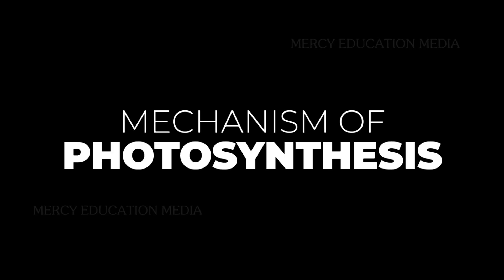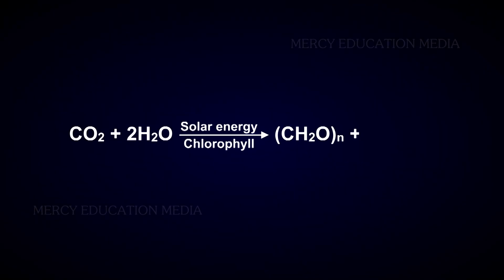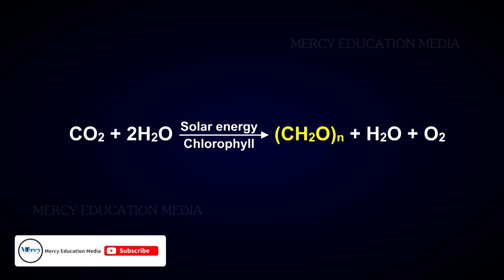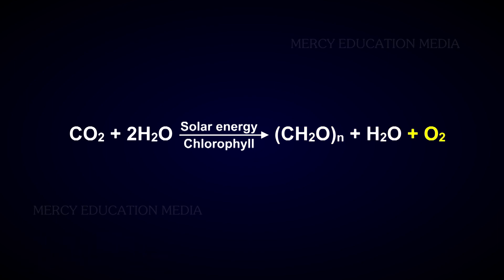Describe the mechanism of photosynthesis. The overall reaction of photosynthesis can be written as follows: CO2 plus 2H2O, in the presence of solar energy and chlorophyll, gives CH2On plus H2O plus O2.